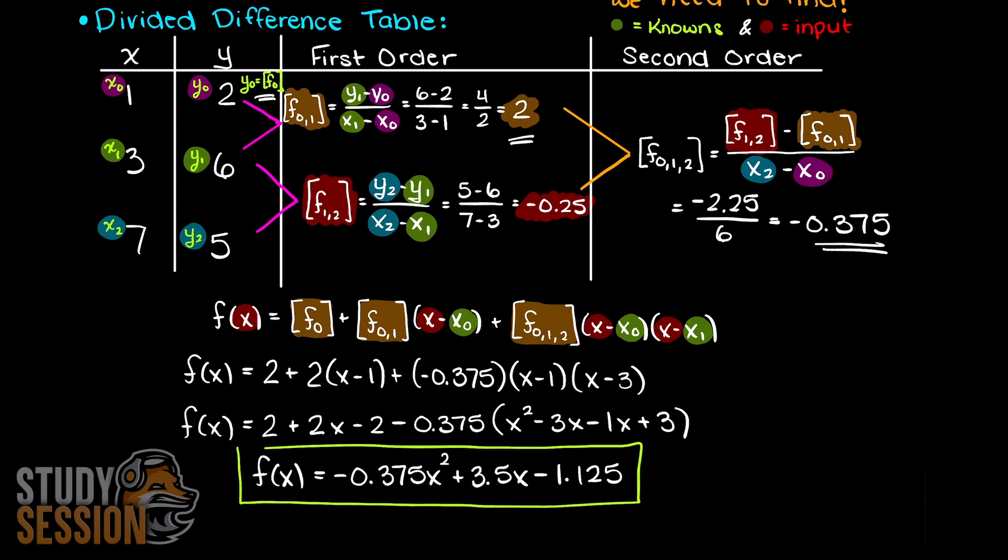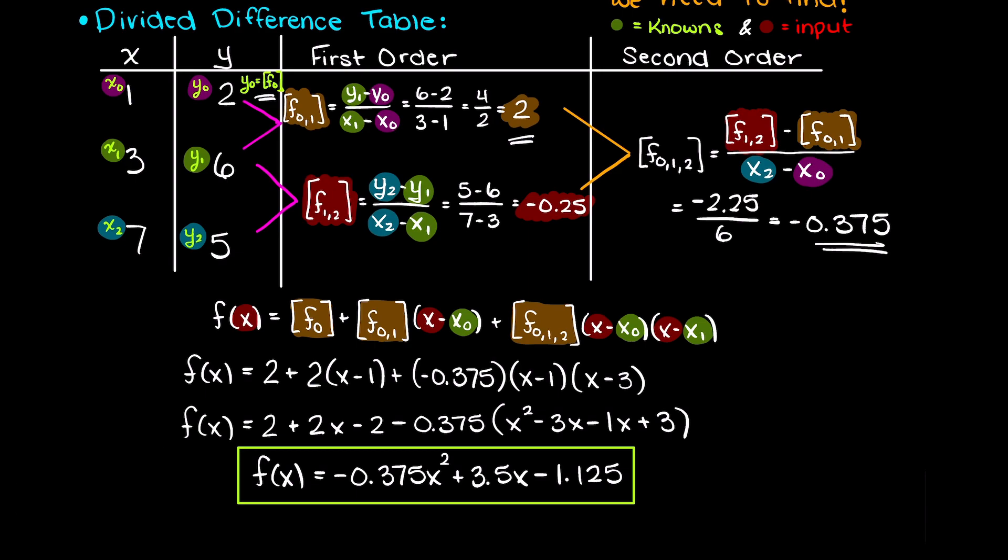You can see that we get Newton's interpolating polynomial of minus 0.375x squared plus 3.5x minus 1.125.